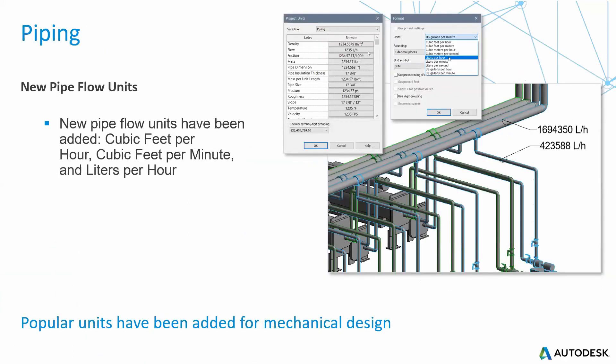Another item that has changed within piping is a new pipe flow unit. A new pipe flow unit has been added — cubic feet per hour and per minute, as well as liters per hour. You can find this under Project Units, discipline Piping, and look for Flow. Under Flow, you can choose the measurements you would like, apply it, and run it in your tags. Popular units have now been made available for mechanical and piping design.